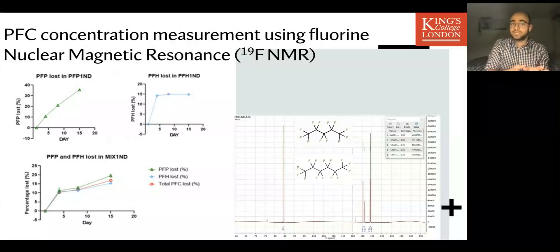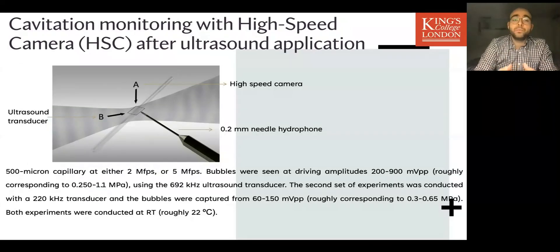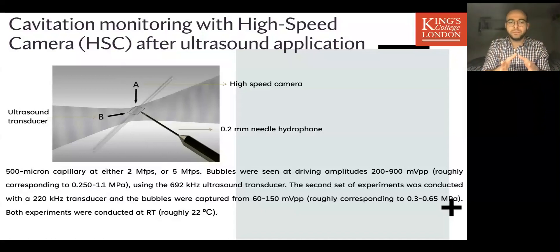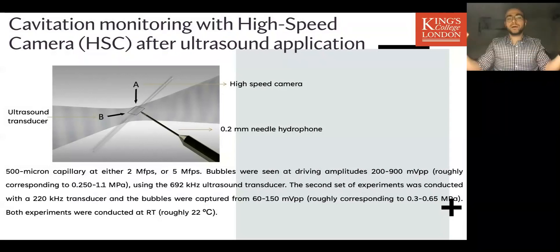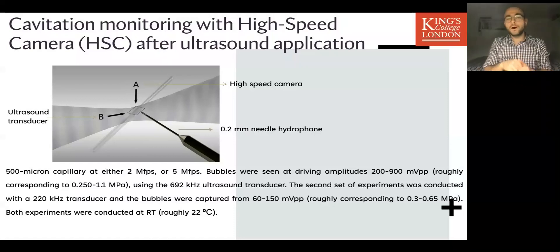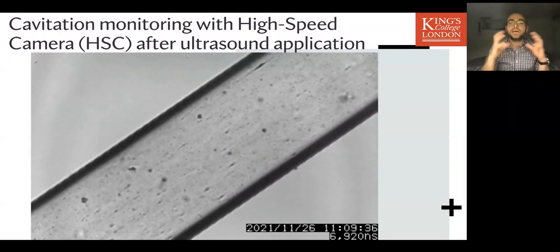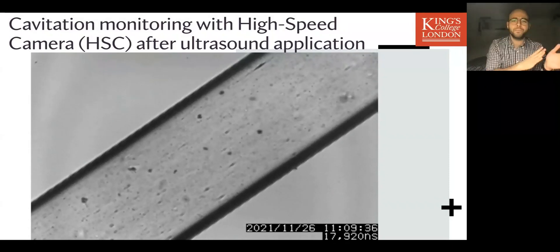To confirm cavitation, we asked collaborators from the University of Glasgow — Paul and Santi — who have a high-speed camera that takes a million frames per second. We forced the nanodroplets through a very thin capillary with ultrasound applied from one side and the high-speed camera on top. As you can see in the video, in nanoseconds there are tiny droplets that expand and contract, captured by the high-speed camera. This confirms that both our perfluoropentane and perfluorohexane nanodroplet formulations do cavitate after ultrasound application.